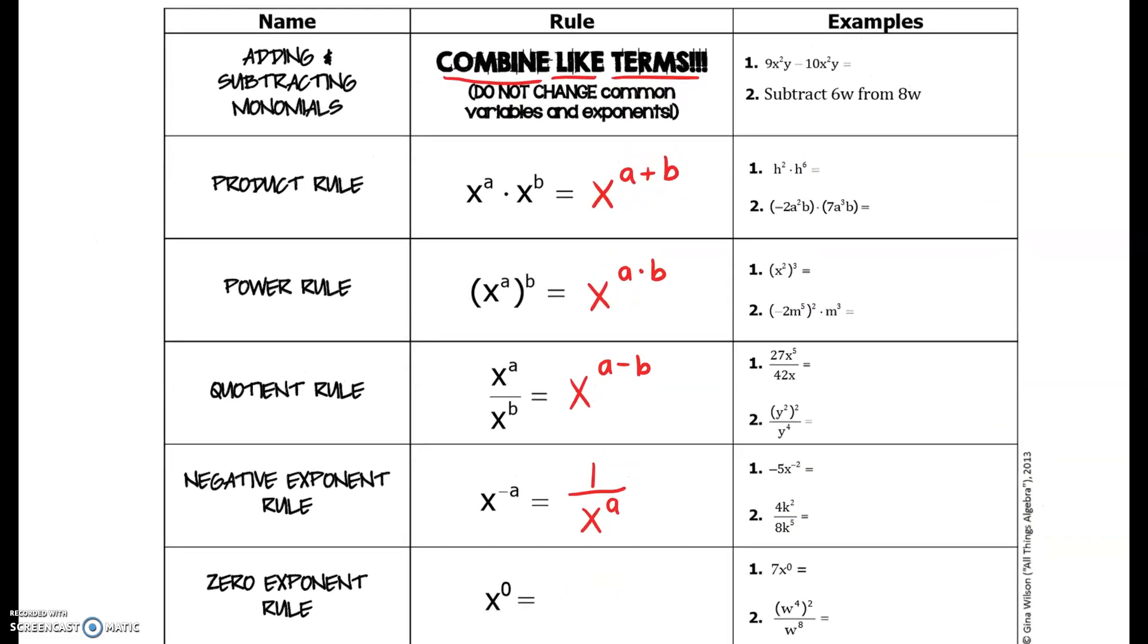The last rule here, something we've mentioned throughout but haven't covered in a separate lesson, is if you have something raised to the zero power, any number, any variable raised to the zero power is equal to one. If you use a calculator, try and type that in. You will notice that you get an answer of one whenever you raise something to the zero power.